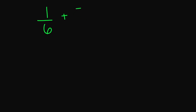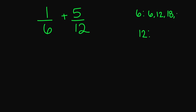Let's try 1 over 6 plus 5 over 12. Notice my denominators are not the same, so I need to find a common denominator. We're going to list the multiples of 6 and 12. For my 6: 6, 12, 18, 24. For my 12: 12, 24, 36. Between these two, the lowest common multiple is going to be 12.